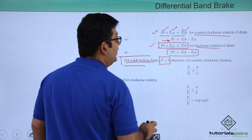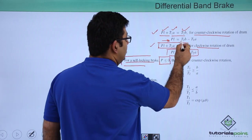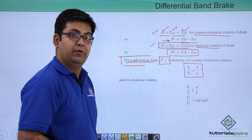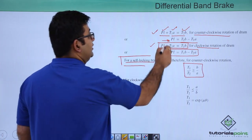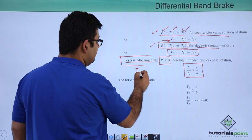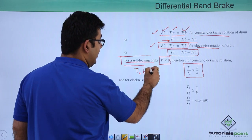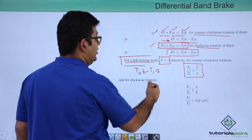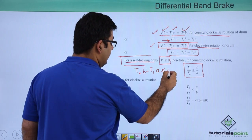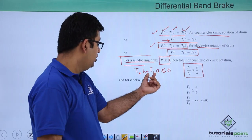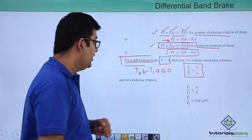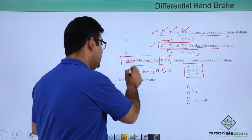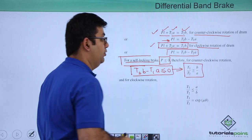If this is the case, then for a counter-clockwise rotation you will have this condition: T1/T2 ≥ B/A, and that comes from T2*B - T1*A = P*L. This would be less than or equal to zero. You can take this onto the other side and you will get T1/T2 ≥ B/A. This is the condition which results in this particular relation.